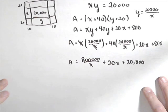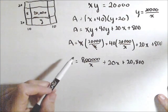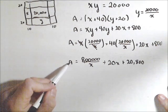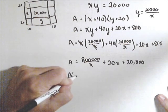So that's my area. Now we need to see if there's any critical points. So we're going to take the derivative, we'll call it A prime, and set it to 0.